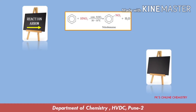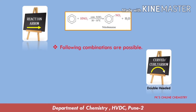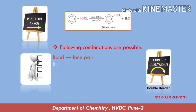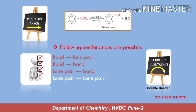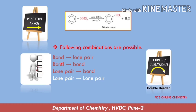Next are curly arrows or curved arrows. There are two types: double-headed curved arrows and single-headed curved arrows. The double-headed curved arrow indicates the direction of movement of electrons. There are four possibilities of this electron movement: electrons can move from bond to lone pair, from bond to bond, from lone pair to bond, and lone pair to lone pair — though this last combination does not work. So mainly, electrons can move from bond to lone pair, from bond to bond, and from lone pair to bond.